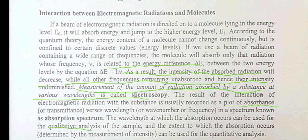If a beam of electromagnetic radiation is directed on a molecule lying in the energy level E-zero, it will absorb energy and jump to a higher energy level — from ground state to excited state. According to quantum theory, the energy content of the molecule cannot change continuously, but is confined to certain discrete values called energy levels.